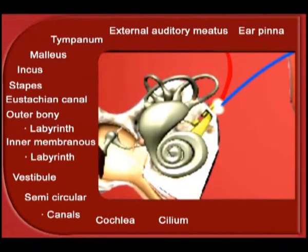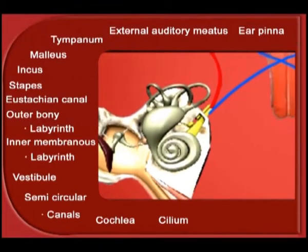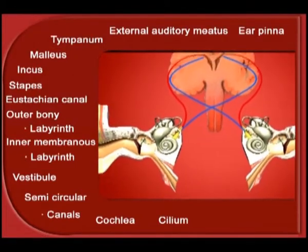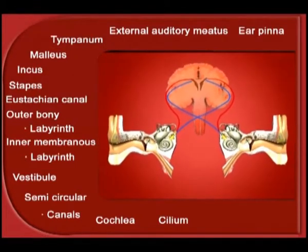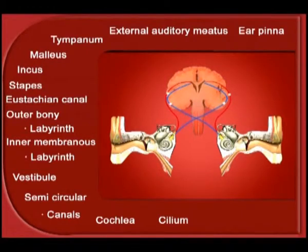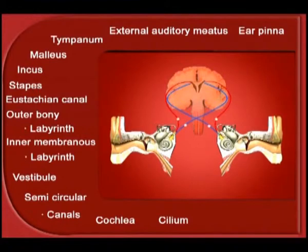The auditory nerve from each ear divides into two halves. One half supplies information about sound, body posture, and movement to the same side of the brain, while the other half supplies the information to the opposite side of the brain. There is a specific area in the brain to analyze the signals received from the auditory nerve.